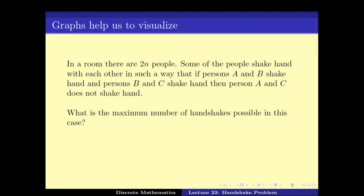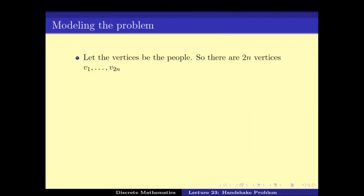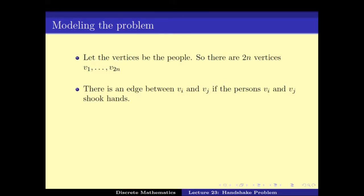To define the graph, we start with defining the vertices. We have 2N people, so for each person we denote a vertex. The vertices are V1 to V2N. The edges should come from the problem — in this case, we draw an edge between Vi and Vj if person Vi and Vj shook hands.